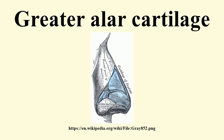The greater alar cartilage is a thin, flexible plate, situated immediately below the lateral nasal cartilage, and bent upon itself in such a manner as to form the medial wall and lateral wall of the naris of its own side. The portion which forms the medial wall is loosely connected with the corresponding portion of the opposite cartilage, the two forming, together with the thickened integument and subjacent tissue, the septum mobile nasi.